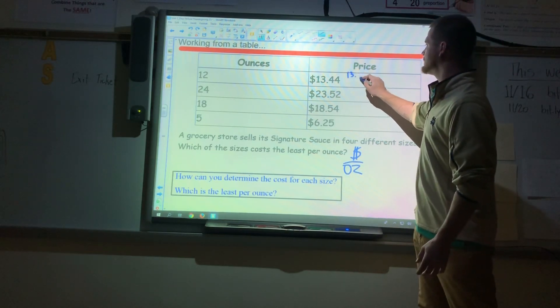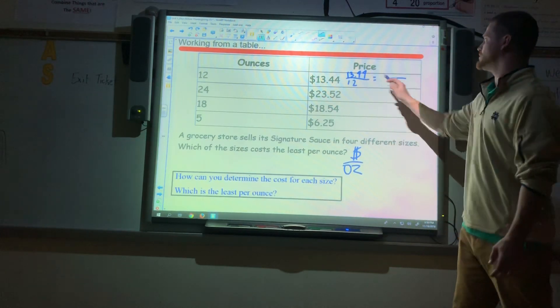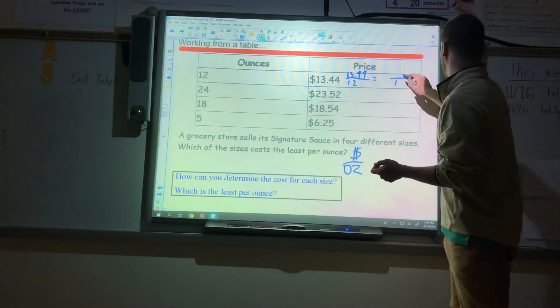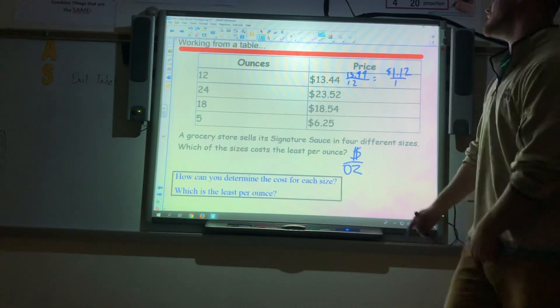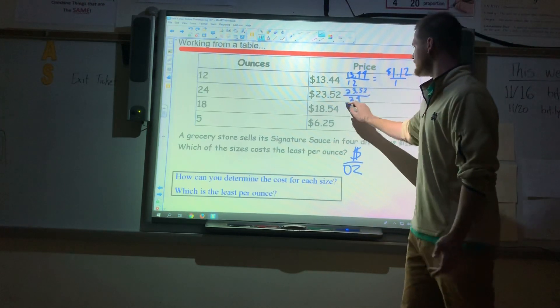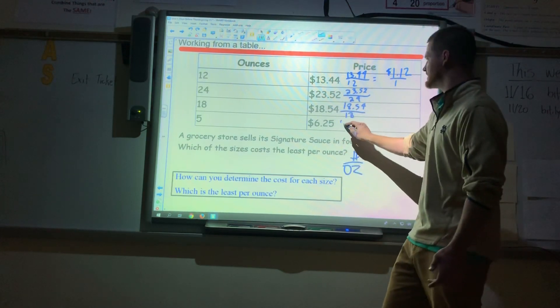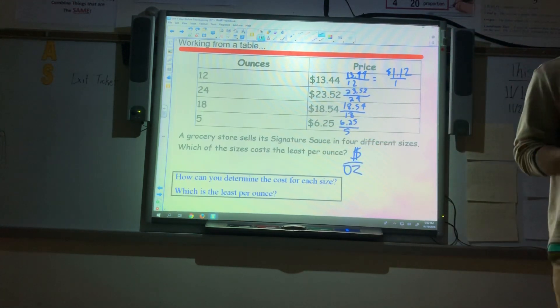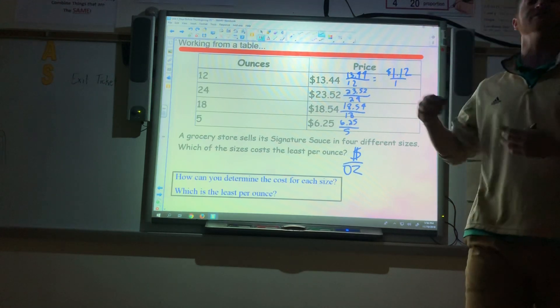When we set this up correctly, it's just basically going to be dollars divided by ounces. So when I set up my top one, it's 13.44 over 12. We've got to get it down to 1. So divide by 12, divide by 12. When you type in 13.44 divided by 12, my answer is going to be a dollar and 12 cents. It makes sense because we can look at these. When I stack all these, I'm going to do that now. 23.52 over 24. 18.54 over 18. Last but not least, I have 6.25 over 5. When I'm looking at these, I know that if my numerator is greater than my denominator, when I divide it out, the answer is going to be greater than 1.